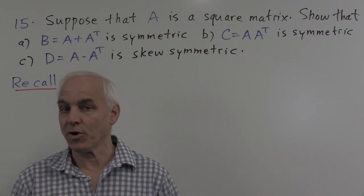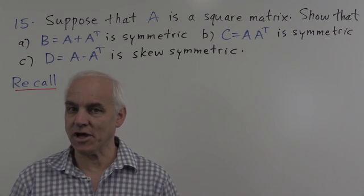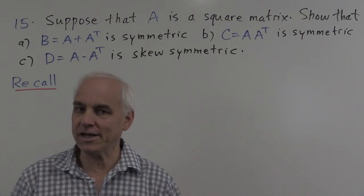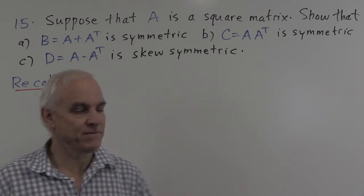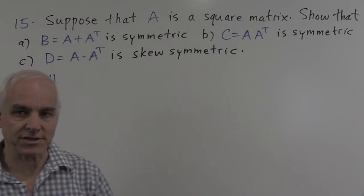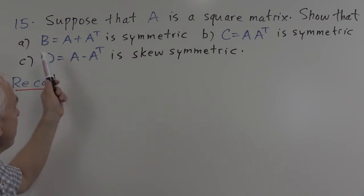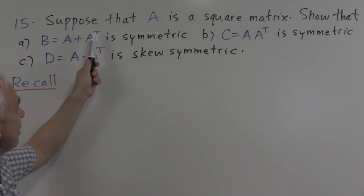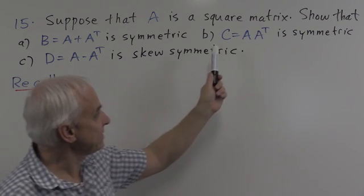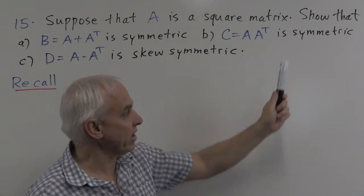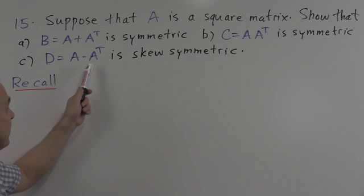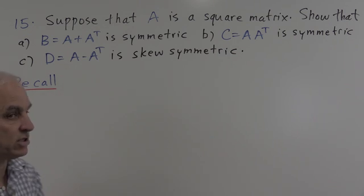Hello, I'm Norman Weilberger. We're at the University of New South Wales. This is question 15 in chapter 5 of our linear algebra problem notes. Suppose that A is a square matrix. We need to show that B, which is A plus A transpose, is symmetric; that C, which is A times A transpose, is symmetric; and that D, which equals A minus A transpose, is skew-symmetric.